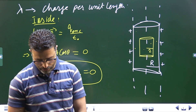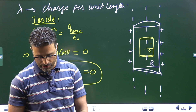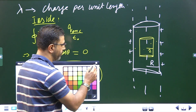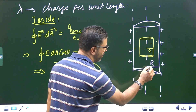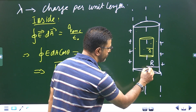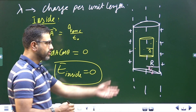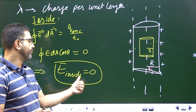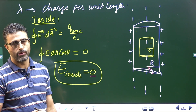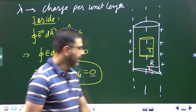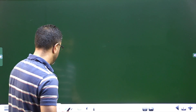Part A asks us to find the field at a distance of R/2. That point lies inside the cylinder, so the field is going to be zero.